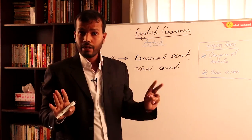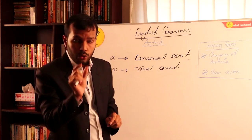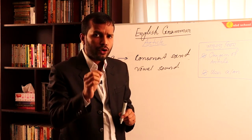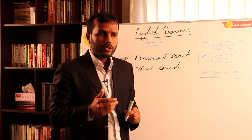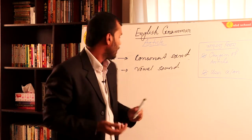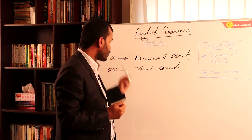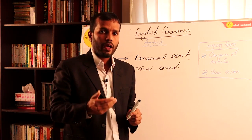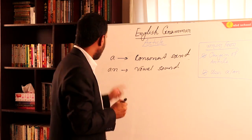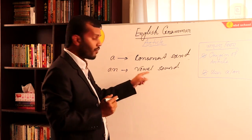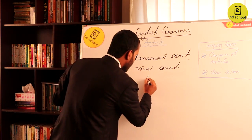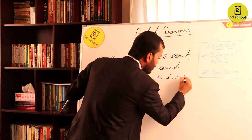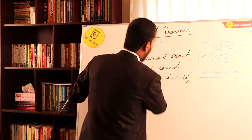Now, the consonant sound — when a word starts with a consonant sound, we use A. When a word starts with a vowel sound, we use AN. The vowels are A, E, I, O, U.